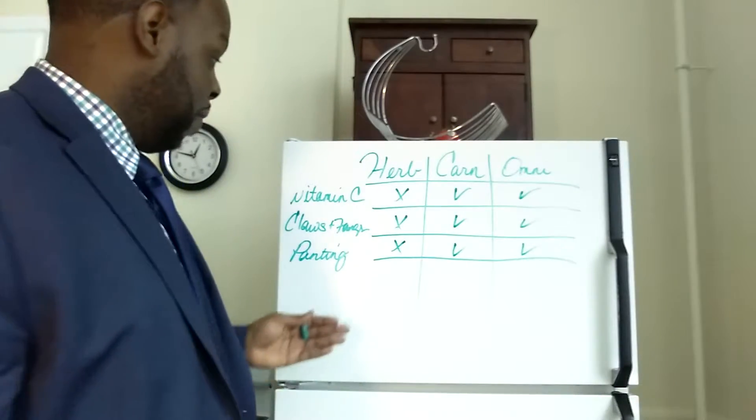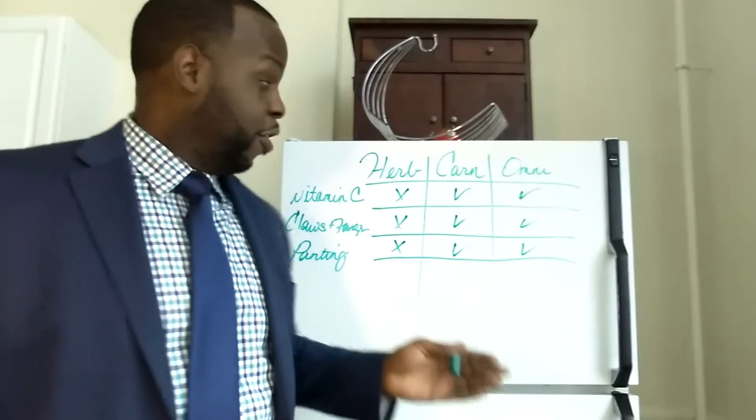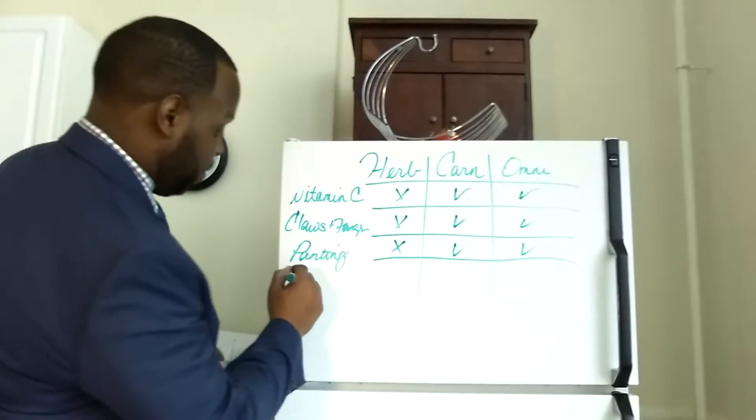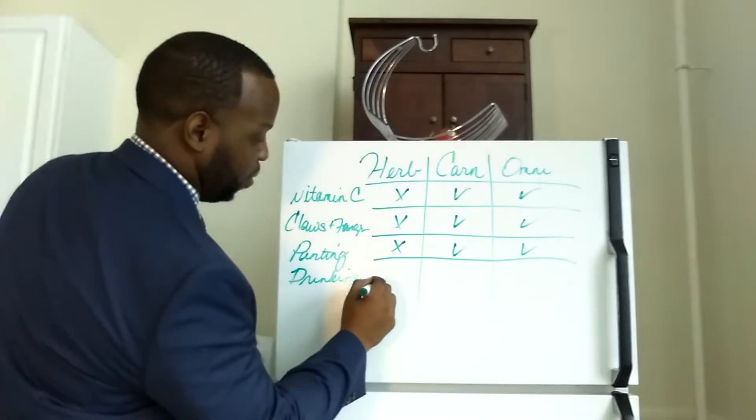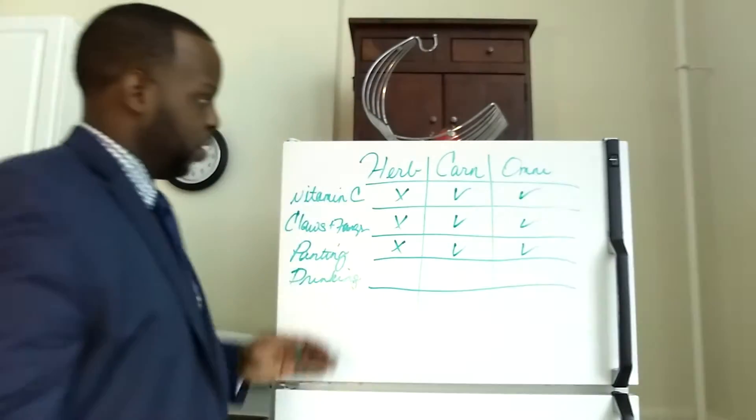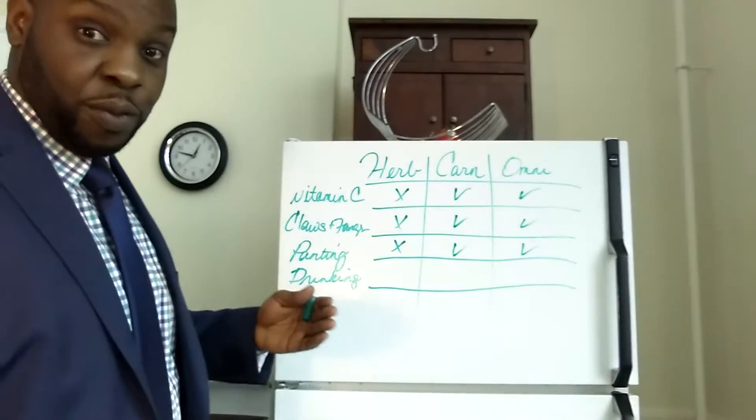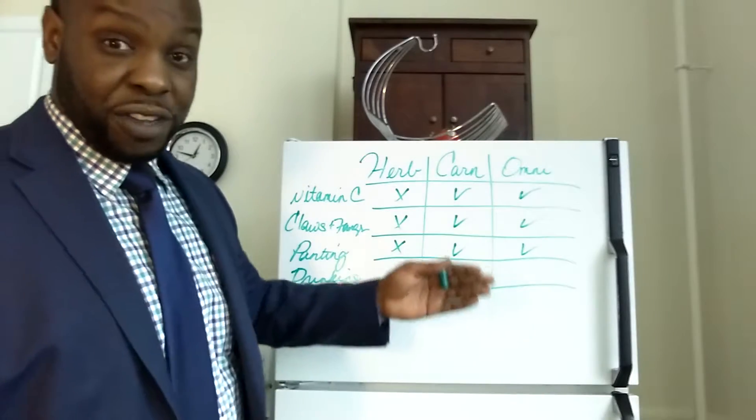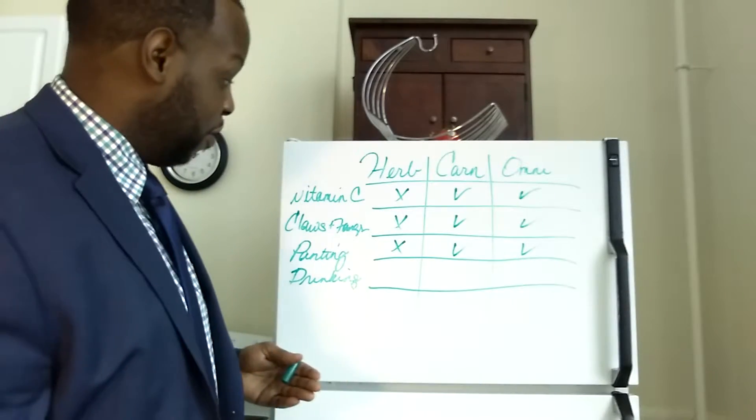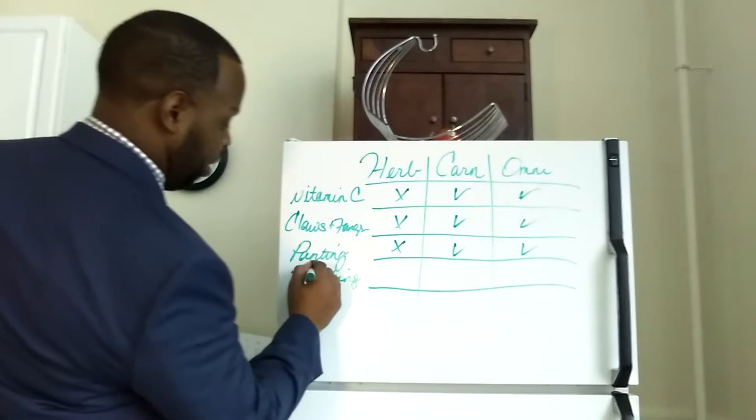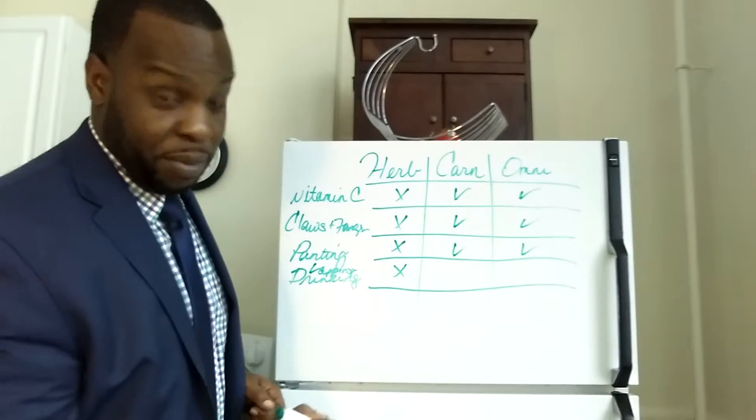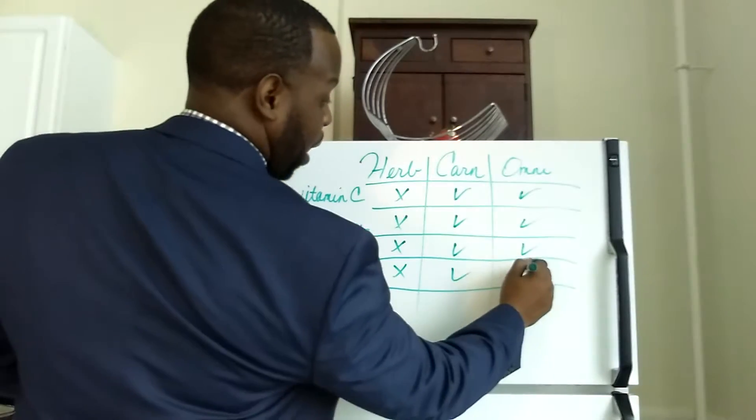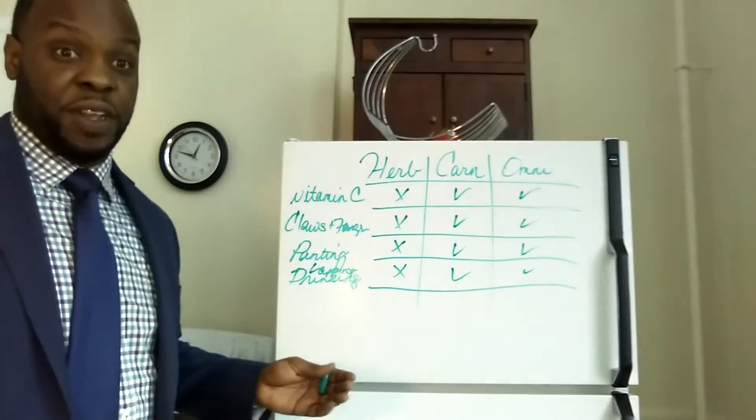Let's talk about drinking water. Herbivores have lips. Herbivores sip water. Carnivores and omnivores lap water with their tongue. We can put here lapping. Herbivores do not lap. Carnivores lap. Omnivores lap.